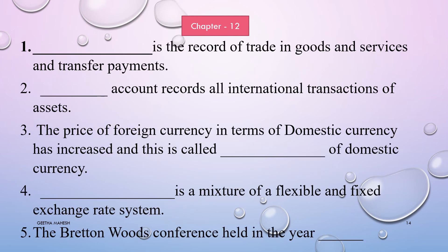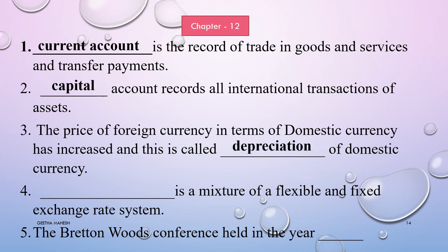Let us discuss a few important fill in the blanks from the open economy. The current account is a record of trade in goods, services, and transfer payments. The capital account records all international transactions of assets. When the prices of foreign currency in terms of domestic currency increase, this is called depreciation of domestic currency. Managed floating is a mixture of fixed and flexible exchange rate systems. The Bretton Woods Conference was held in the year 1944.